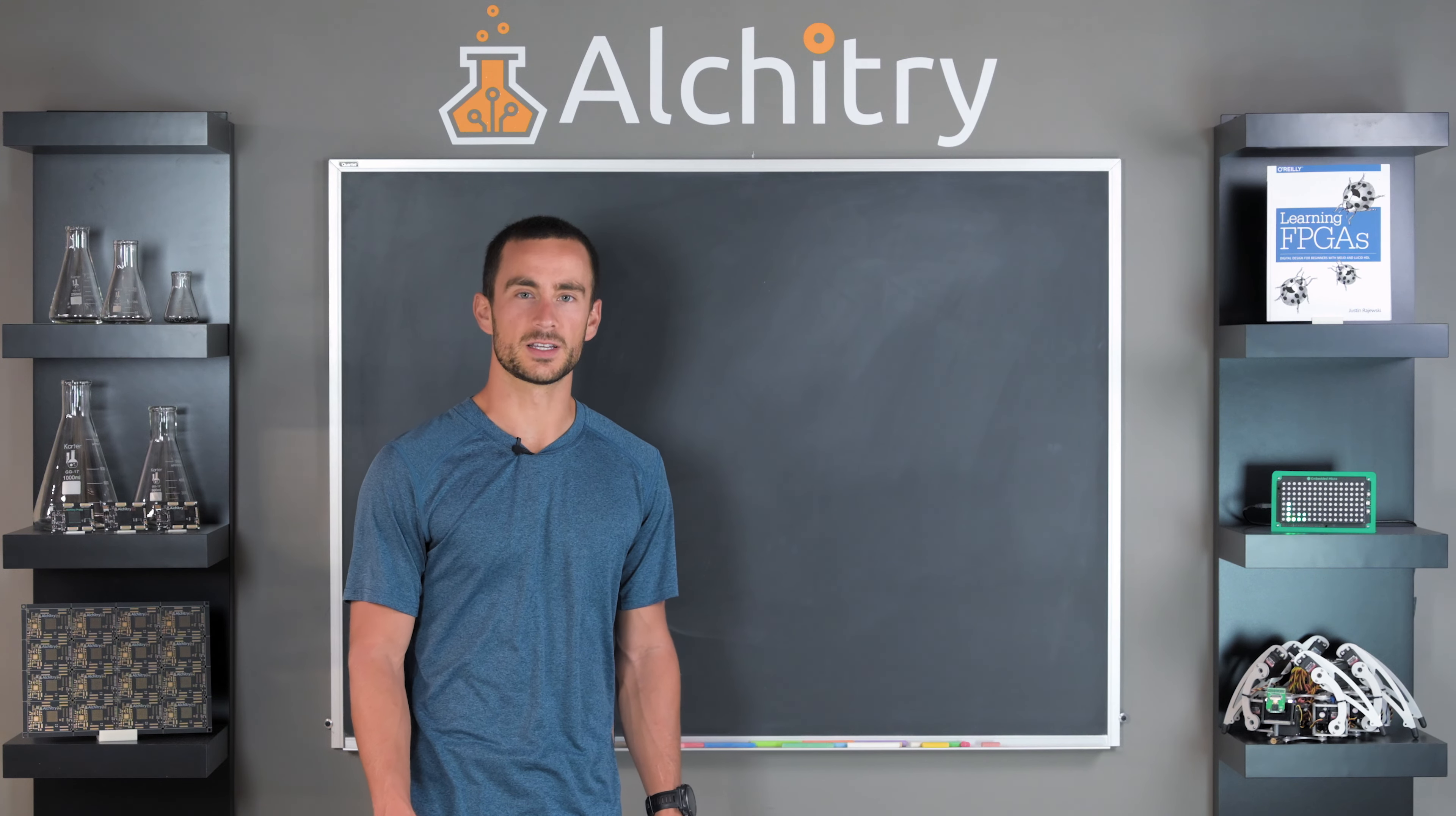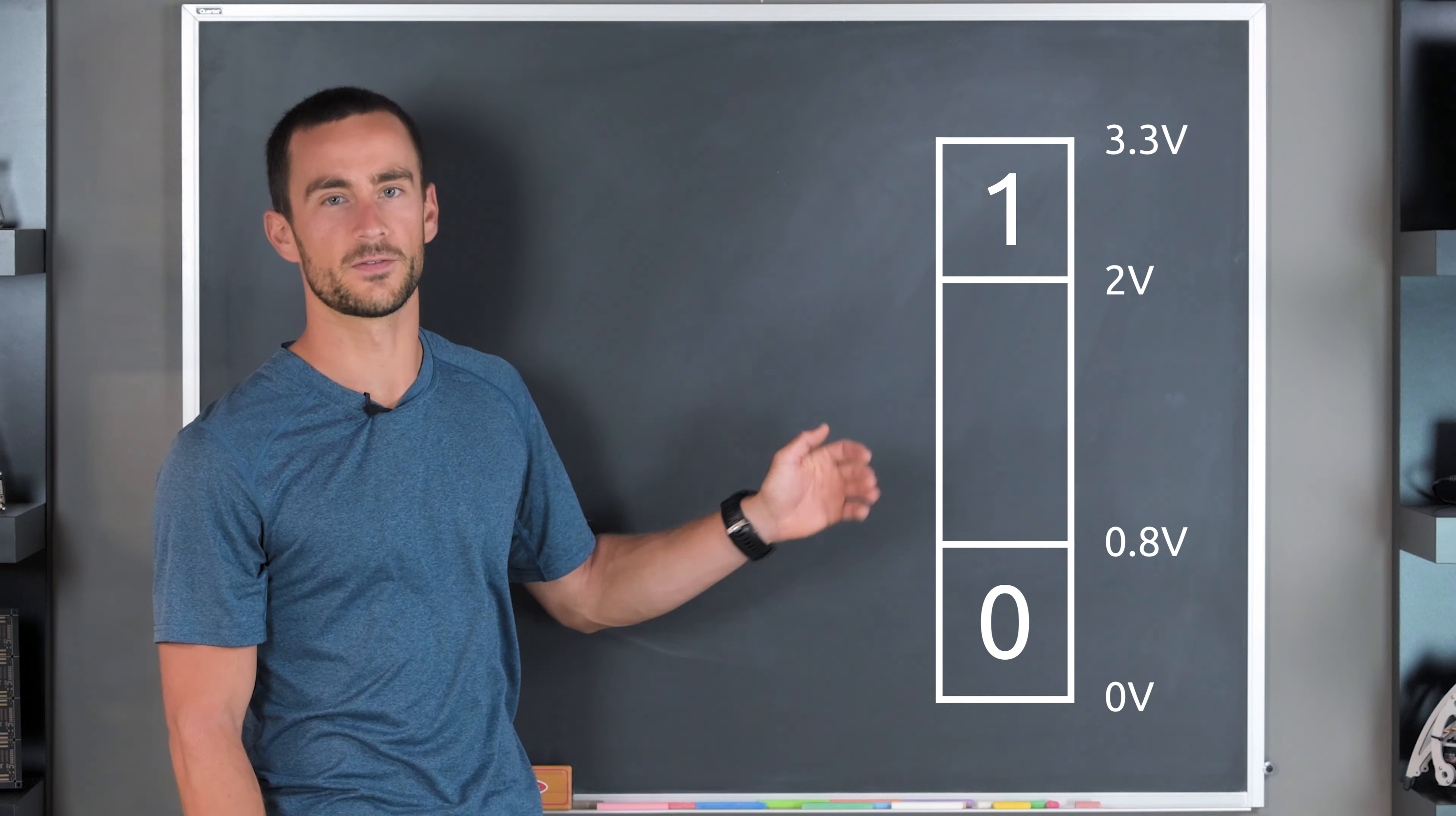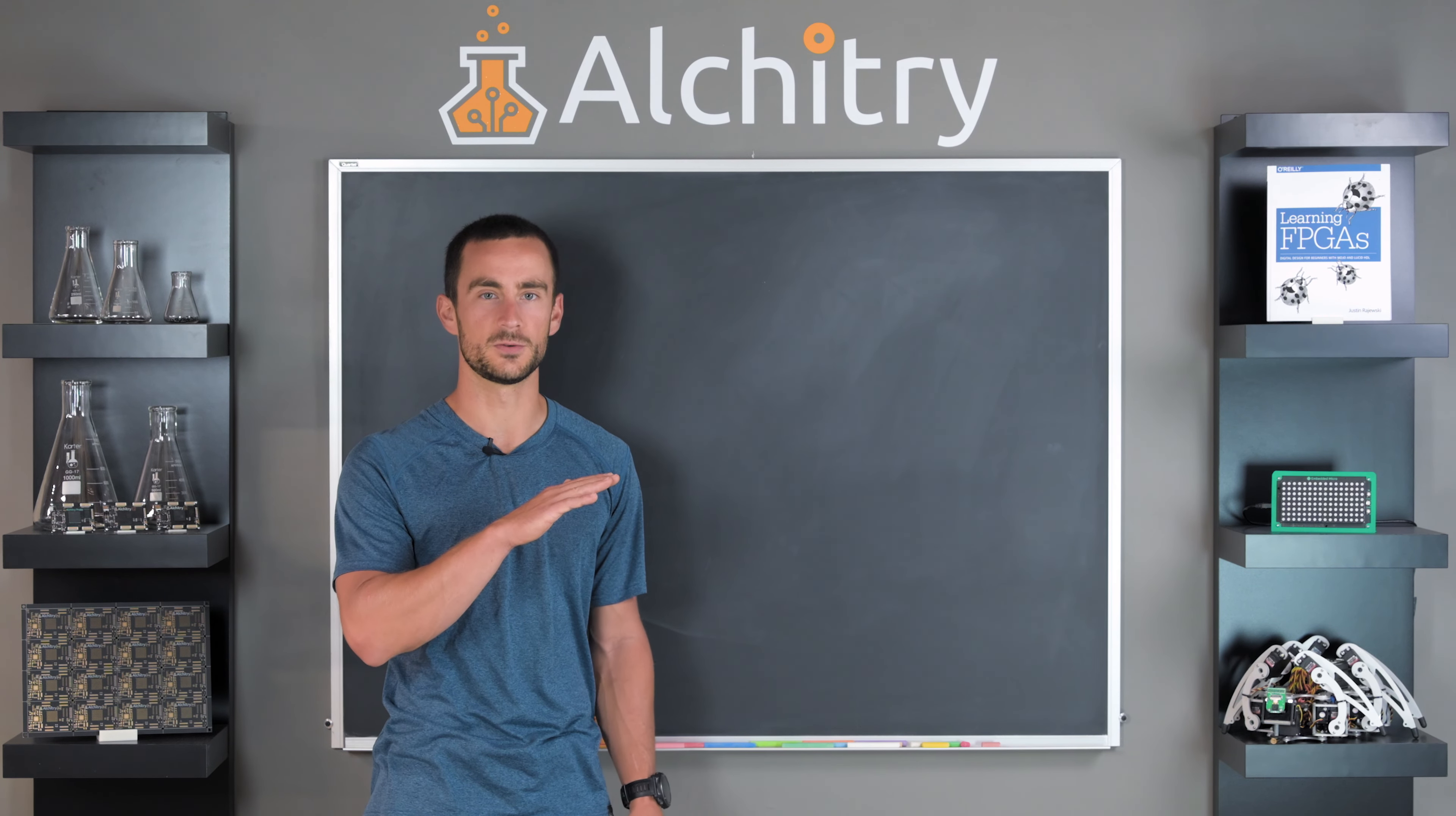The actual ranges that define each one depend on the particular circuit and the technology used. For a circuit running off of 3.3 volts, a zero is often represented from anything from 0 to 0.8 volts, while a 1 is anything from 2 to 3.3 volts. The values between these two ranges are often referred to as no man's land, and the circuits are designed to avoid this region. So to reiterate, for a circuit running off of 3.3 volts, a digital circuit is one that attempts to stick to these two extremes of zero volts and 3.3 volts, instead of using the full spectrum of voltages between.